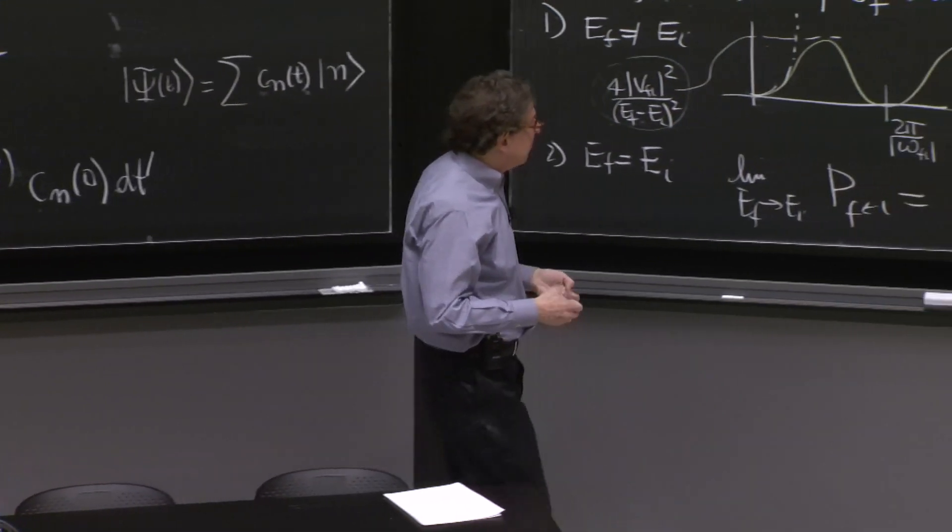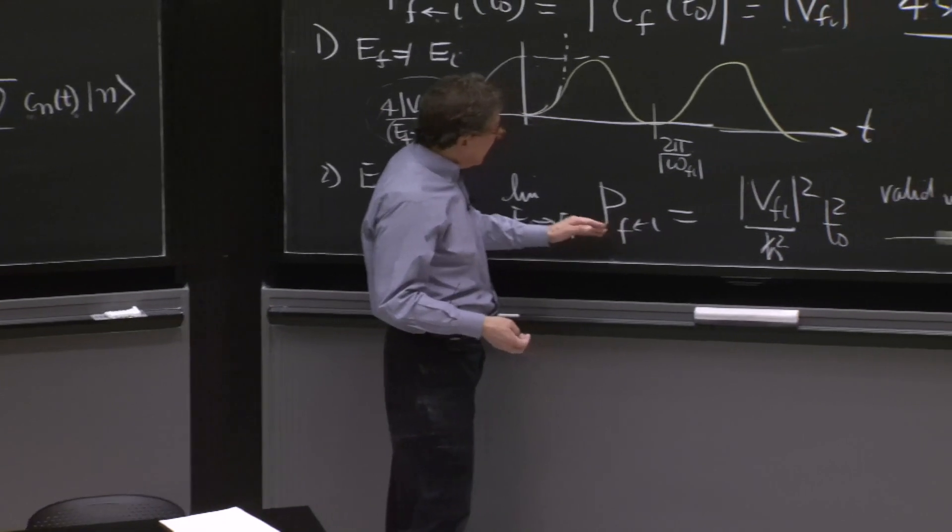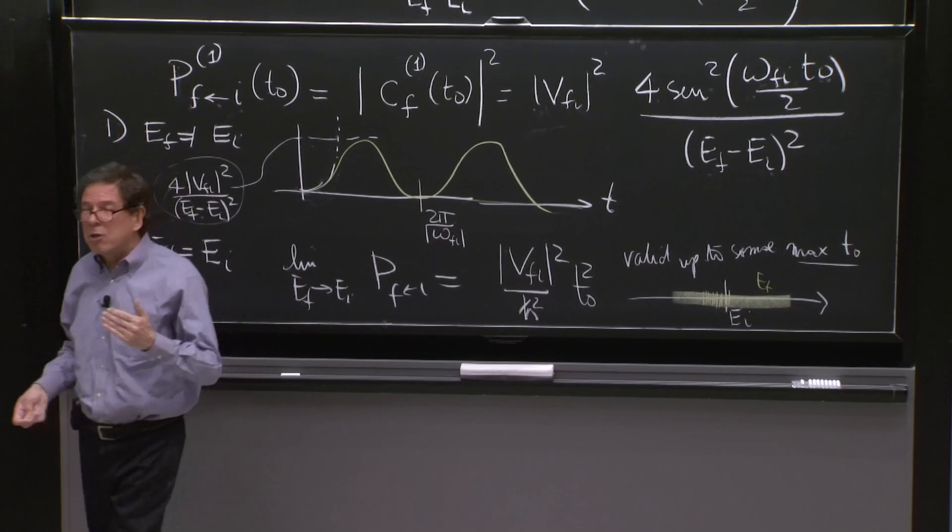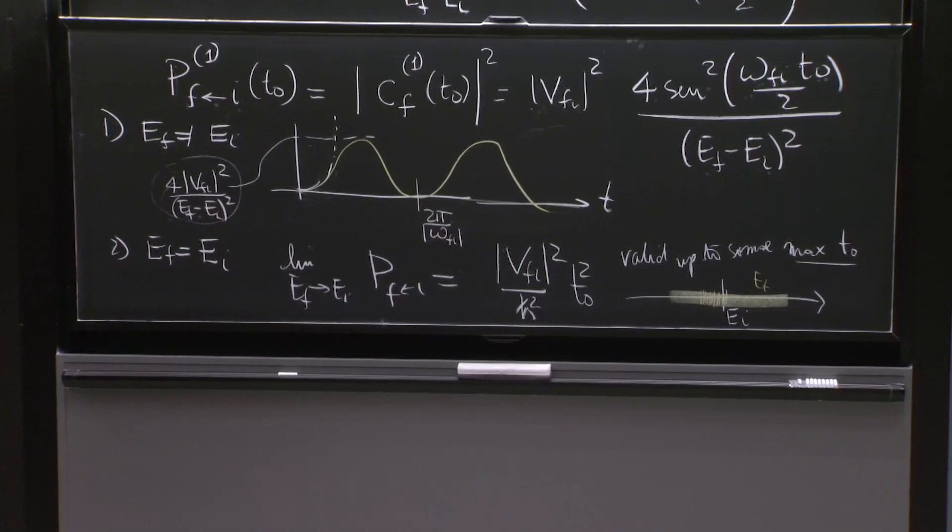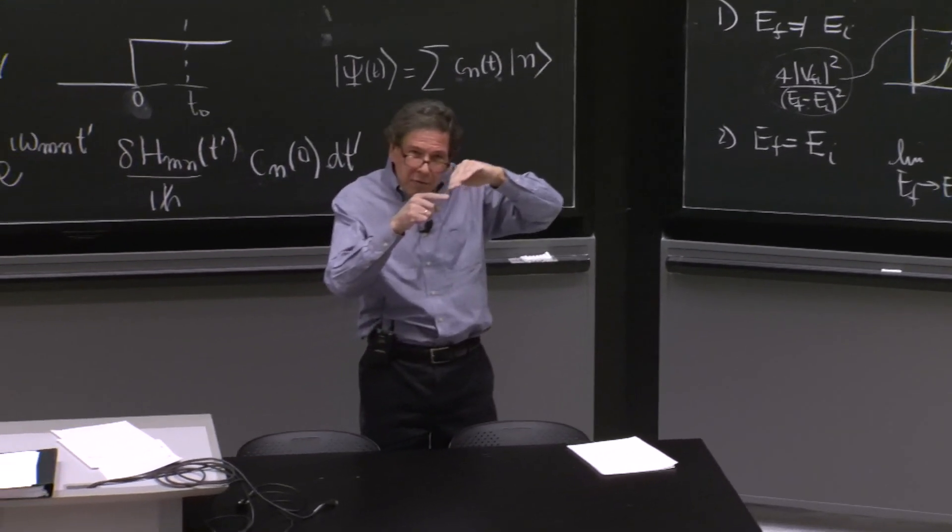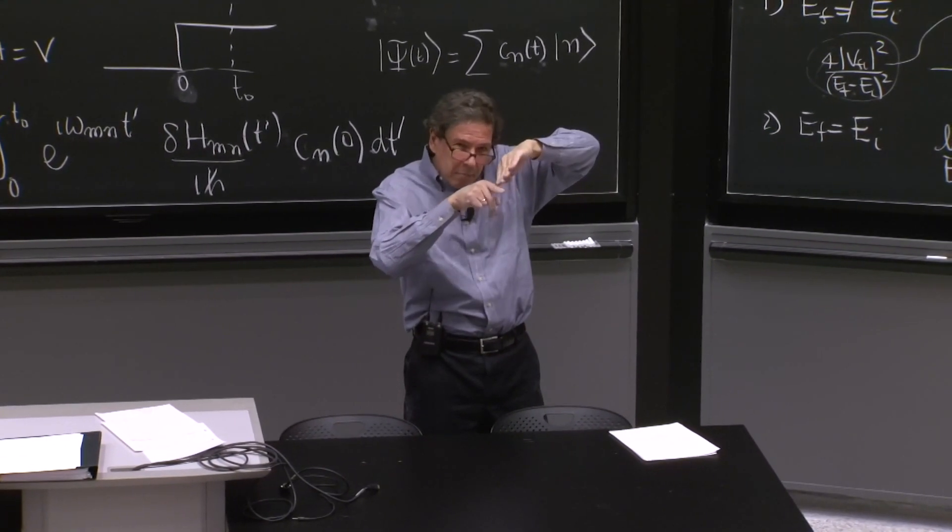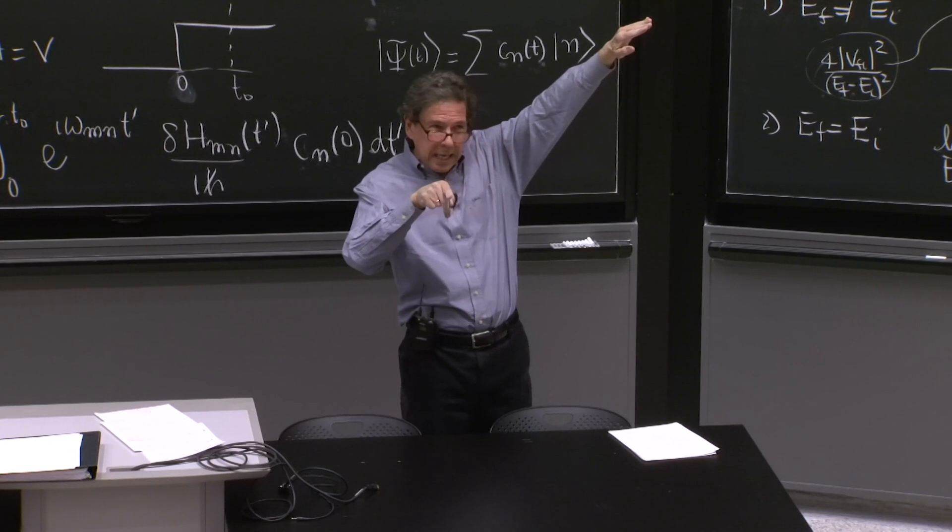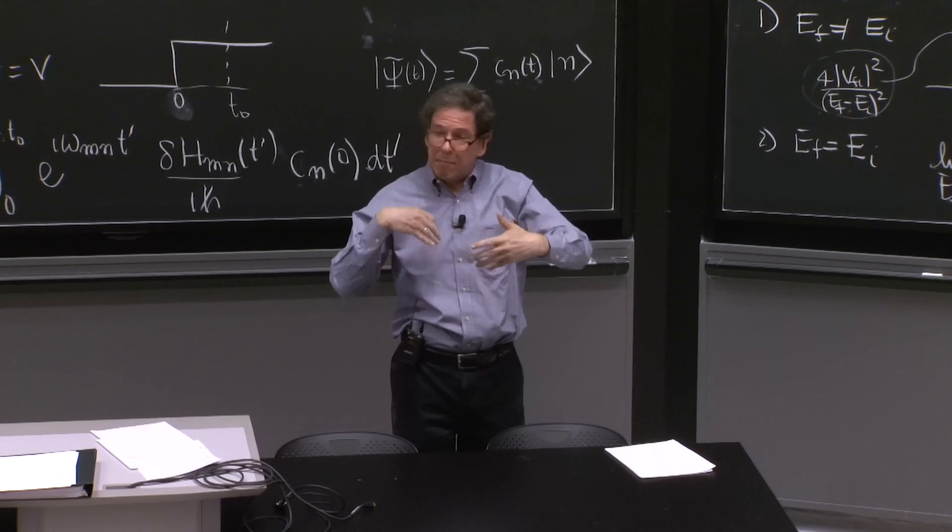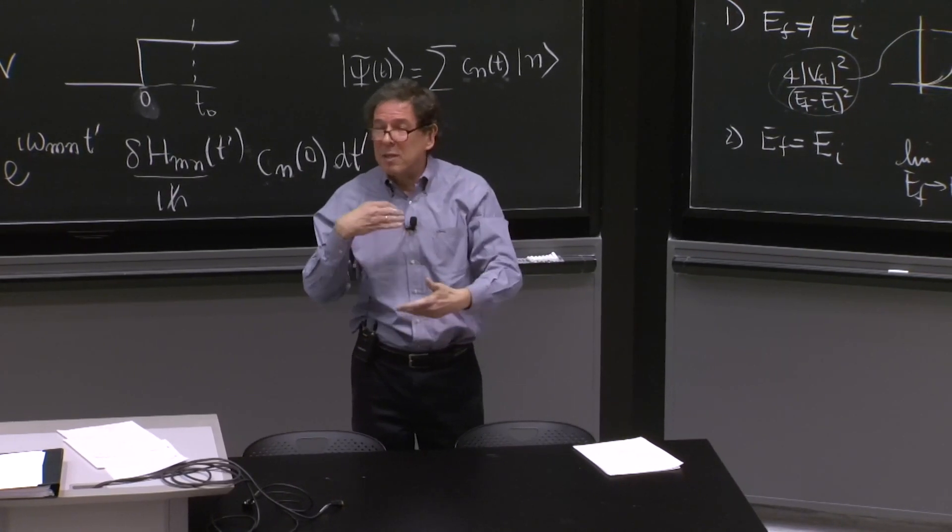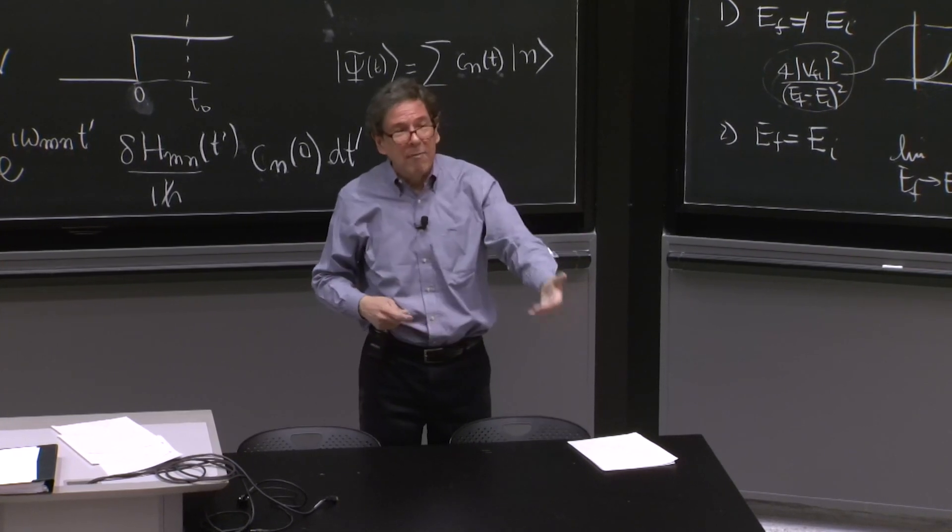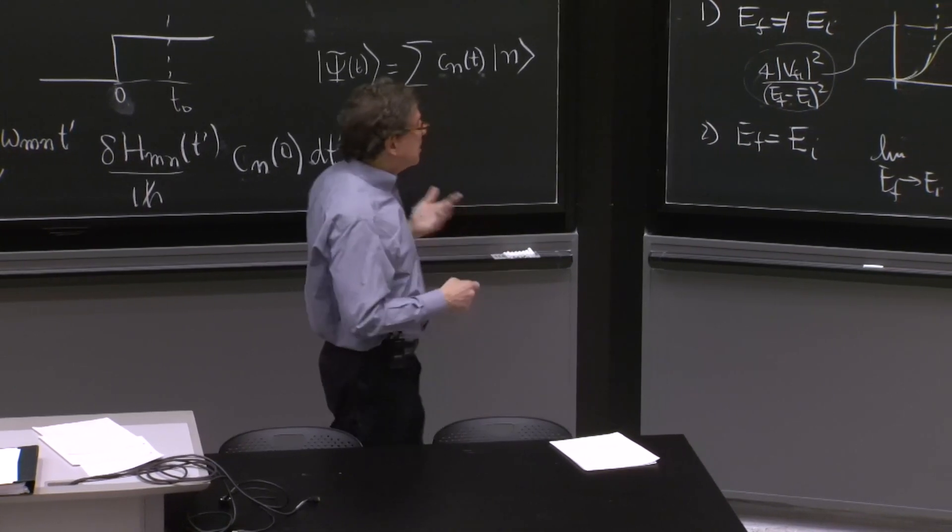So we need, in order to have a transition rate, the probability that you transition has to be proportional to the time that the perturbation has been acting. So the probability of transition must grow linear in t. Therefore, you have a transition rate, which is the probability of transition per unit time. So it grows linear in time. So per unit time, you have a transition rate.